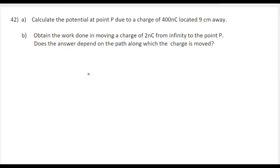This question is from the chapter electrostatic potential and capacitance. Calculate the potential at point P due to a charge of 400 nanocoulomb located 9 centimeters away. Subsection b: obtain the work done in moving a charge of 2 nanocoulomb from infinity to the point P. Does the answer depend on the path along which the charge is moved?